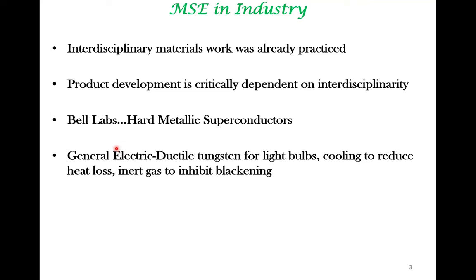Another place where interdisciplinary material science was well demonstrated is the General Electric Industrial R&D Lab. For example, how do you optimize a ductile material — in this case, tungsten for light bulbs? What kind of design principles were used to optimize a light bulb? Even though a light bulb looks like a very simple device, what had to be done to bring to fruition a long-lasting light bulb makes very interesting reading.